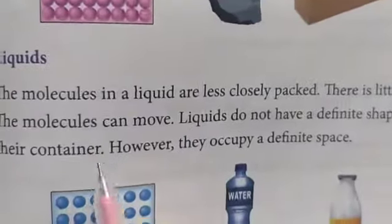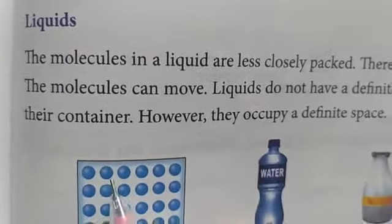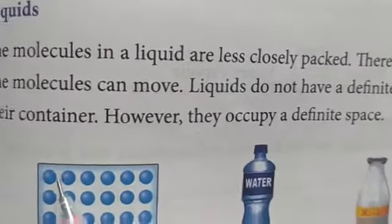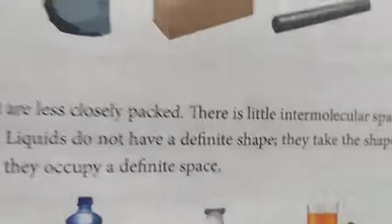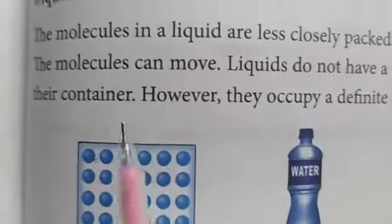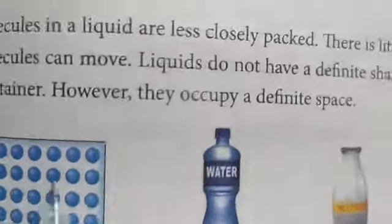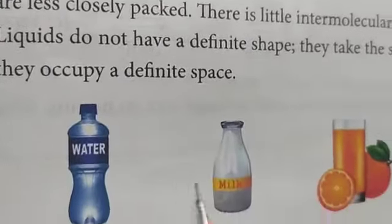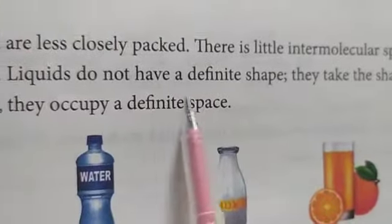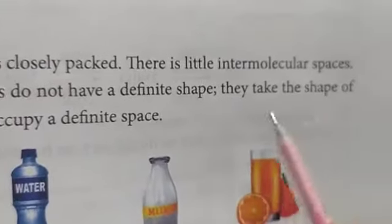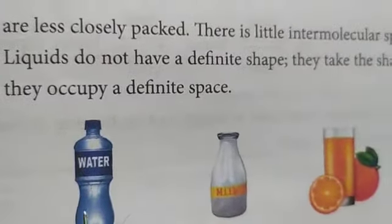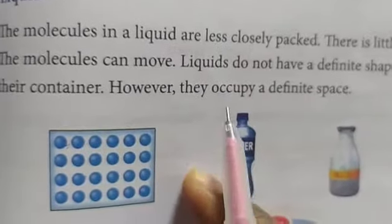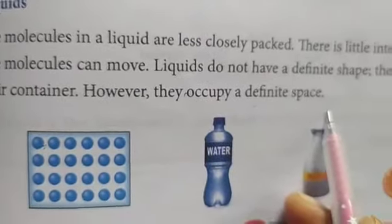In liquids, the molecules are less closely packed — they will be a little far away from each other, so there is a little intermolecular space. The molecules can move. Liquids like water, milk, and juices do not have a definite shape. In whichever container we pour them, they take the shape of that container. But they occupy a definite volume.